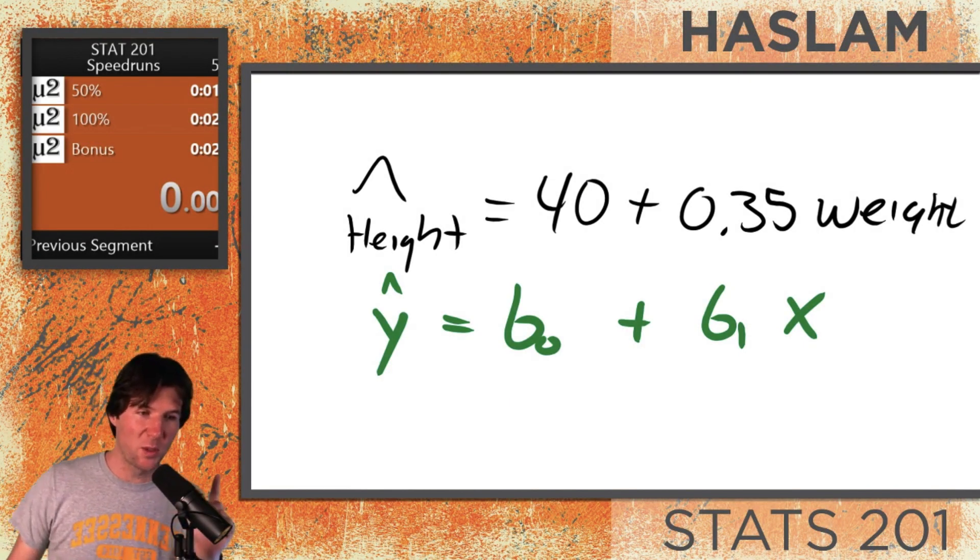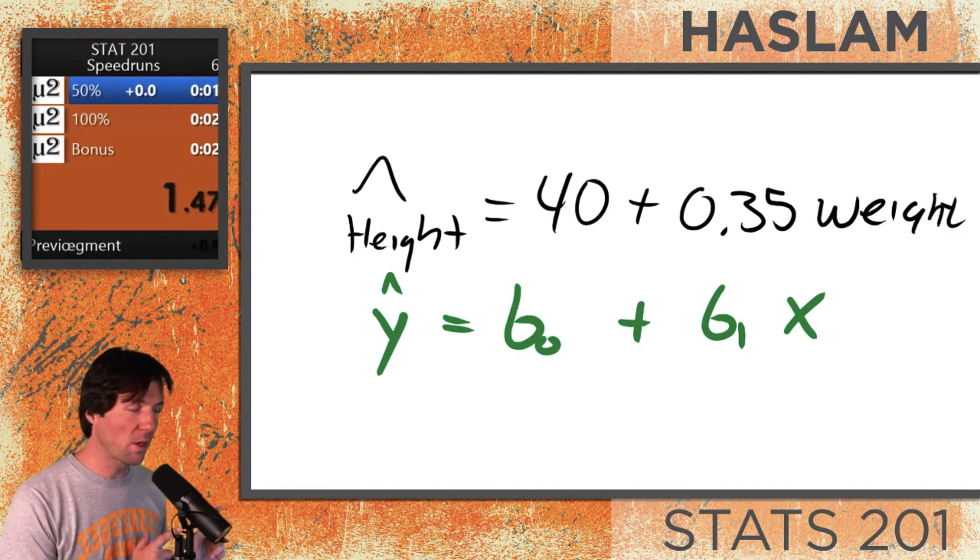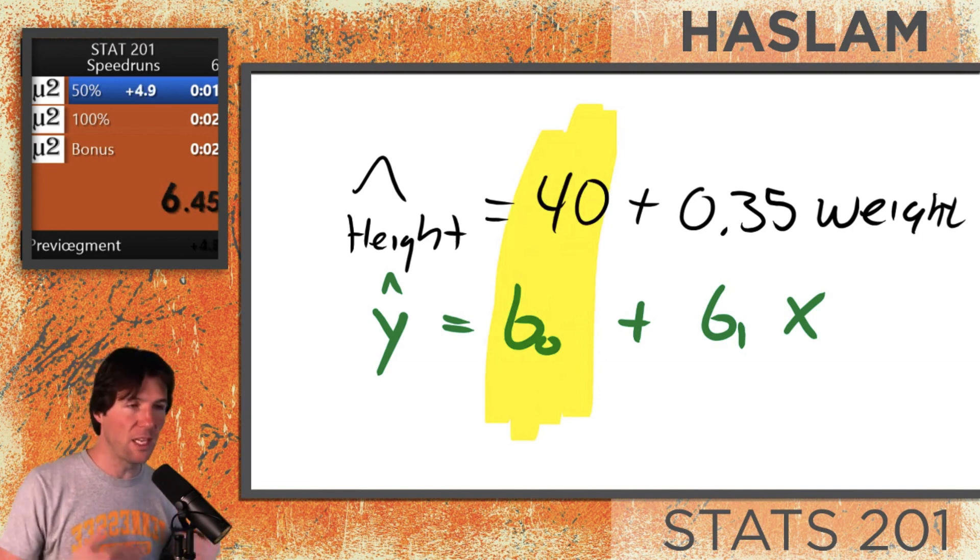And I want you to listen in on these words as I do a speed run on the interpretations. The first thing we're going to interpret right here is B0. B0 is the interpretation of the intercept.